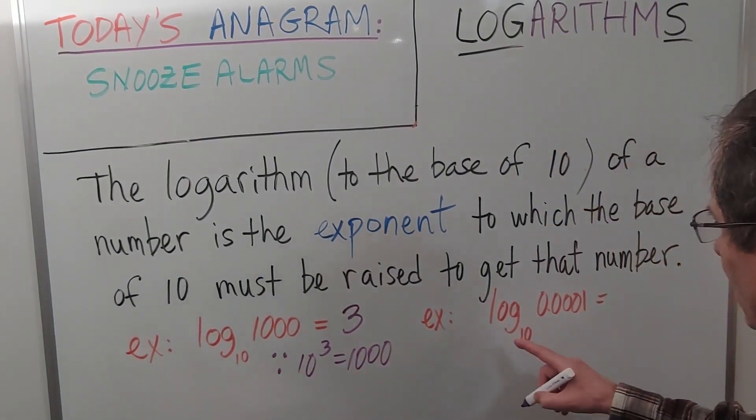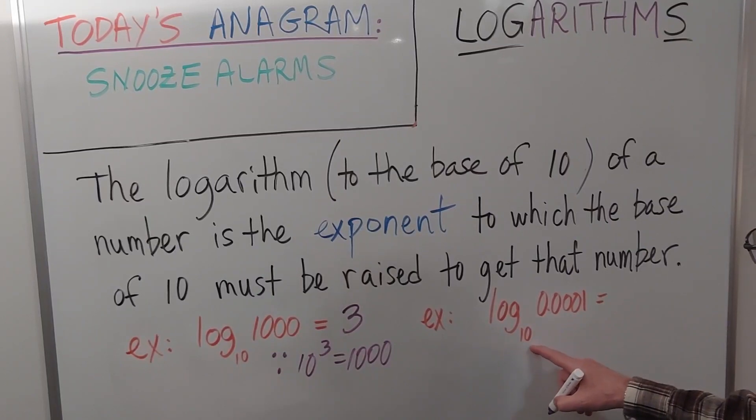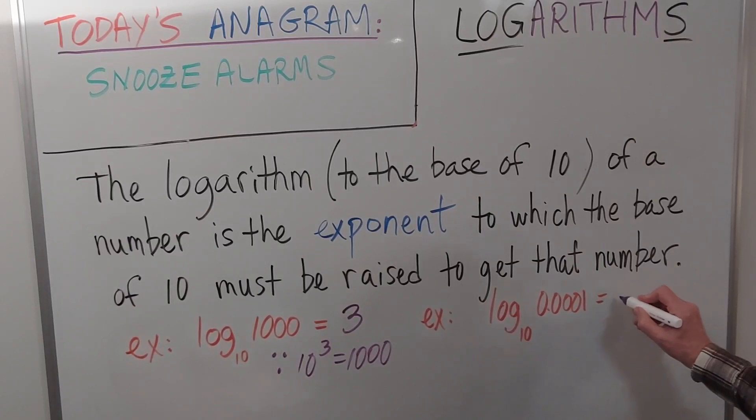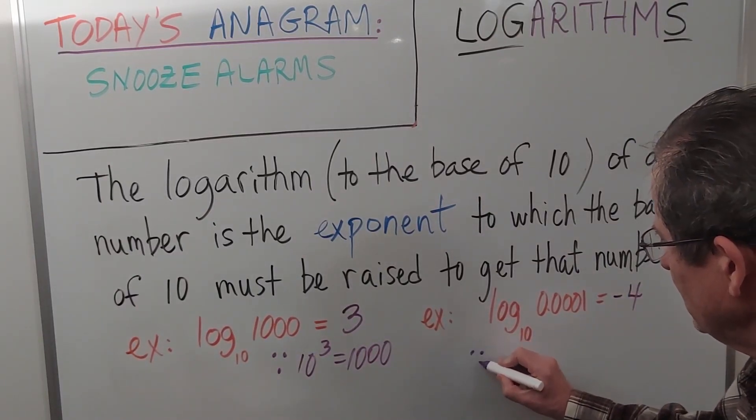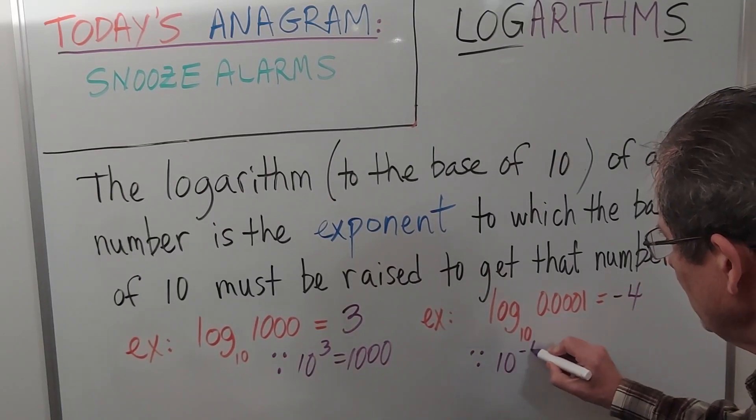Let's try this one. The log to the base 10 of 0.0001. Similarly that's negative 4, because 10 to the negative 4.